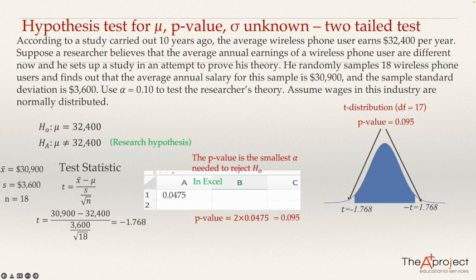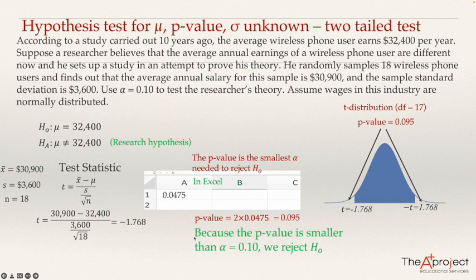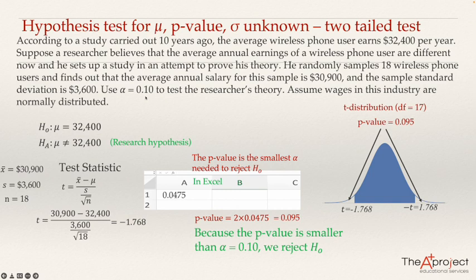Now that we have the p-value, we can make a decision. If the p-value is smaller than alpha, the level of significance, we reject the null hypothesis. In this case, the p-value is 0.095 and alpha is 0.10. Since the p-value is smaller than alpha, we reject the null hypothesis at a significance level of 0.10.